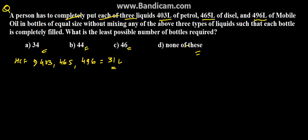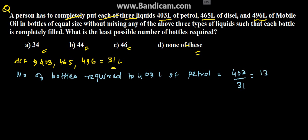Now, the number of bottles required to put 403 liters of petrol can be derived by 403 upon 31, which comes to 13. So 13 bottles are required to fill 403 liters of petrol.